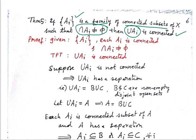What is given? Given: each Aᵢ is connected — we have a family of connected subsets of X with the property that if you take any number of them, the intersection of them is not null. To prove: the union of all those is connected.